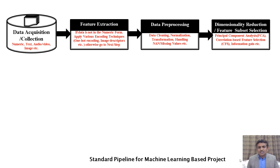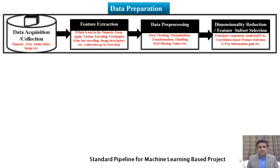The next step after data pre-processing may be dimensionality reduction or feature subset selection. Since the data we have obtained so far may have huge dimensionality, we may apply different techniques to reduce dimension, such as Principal Component Analysis (PCA), correlation-based feature selection, or information gain. All these steps — data acquisition, feature extraction, data pre-processing, and dimensionality reduction — can be treated under data preparation.